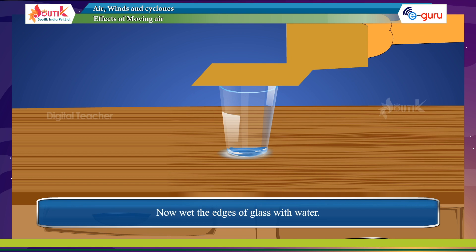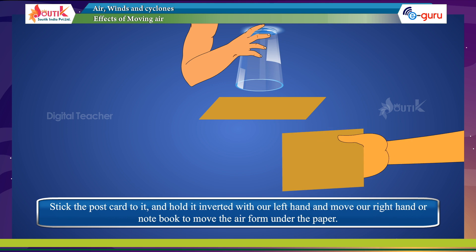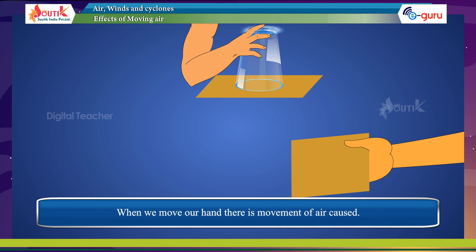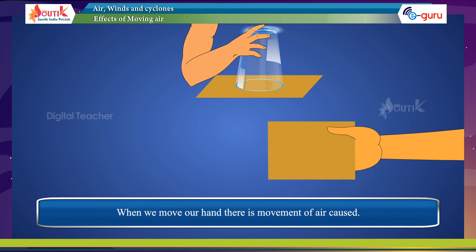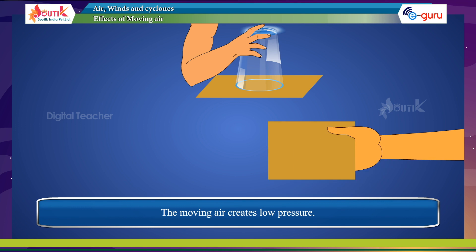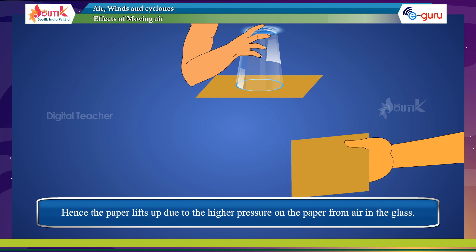Now, wet the edges of the glass with water. Stick the postcard to it and hold it inverted with your left hand, and move your right hand or notebook to move the air from under the paper. When we move our hand, there is movement of air caused. The moving air creates low pressure. Hence, the paper lifts up due to the higher pressure on the paper from air in the glass.